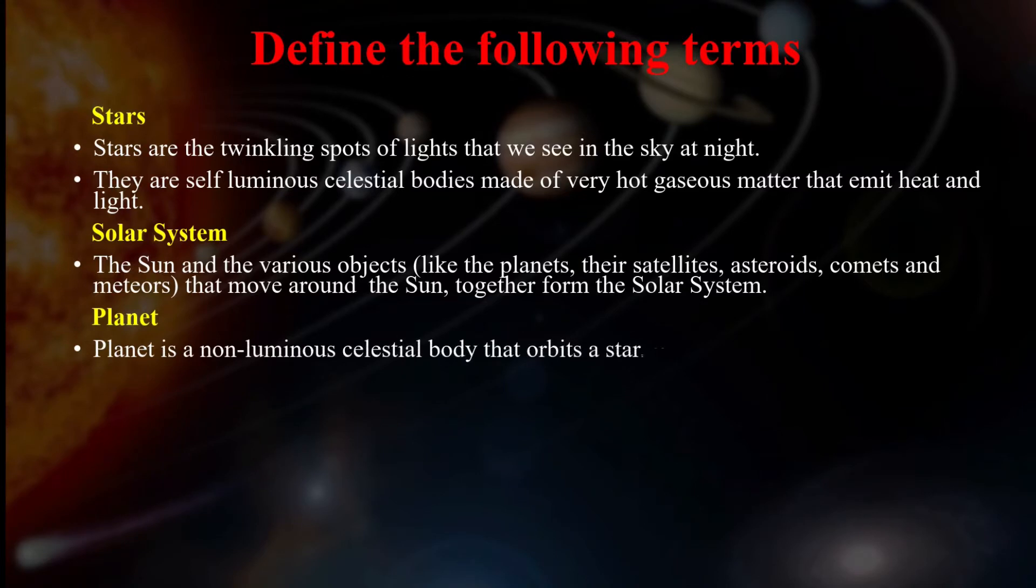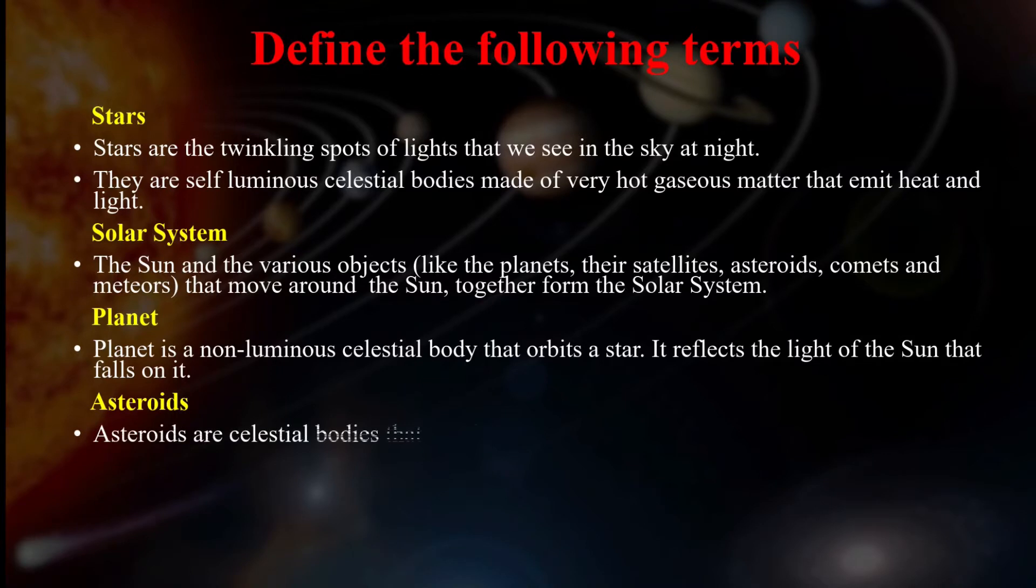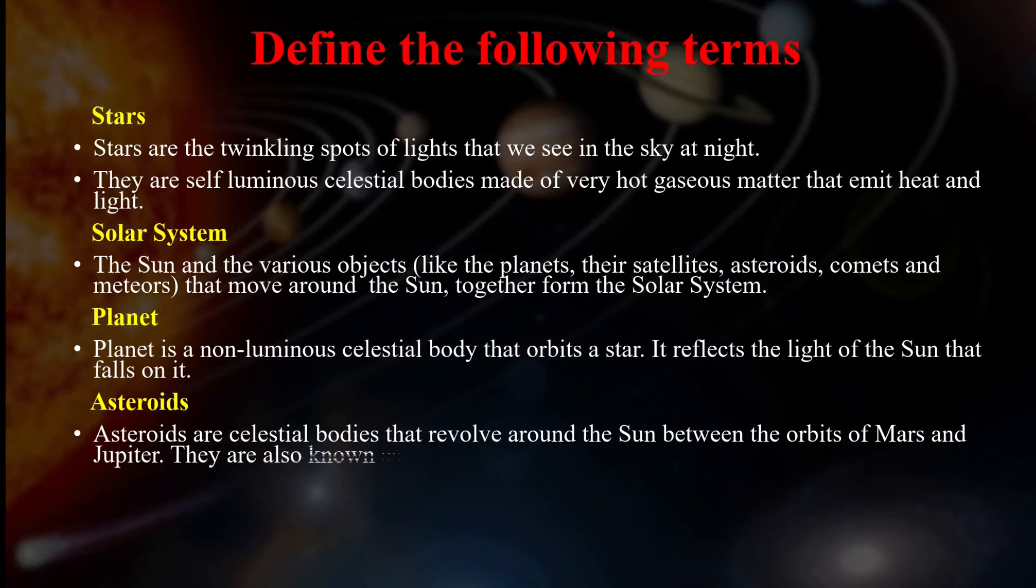Planet. A planet is a part of the solar system. Planet is a non-luminous celestial body that orbits a star. Planets reflect the light of the sun that falls on it. Planets do not have their own light. Asteroids are celestial bodies that revolve around the sun between the orbits of Mars and Jupiter. Asteroids are also known as planetoids.